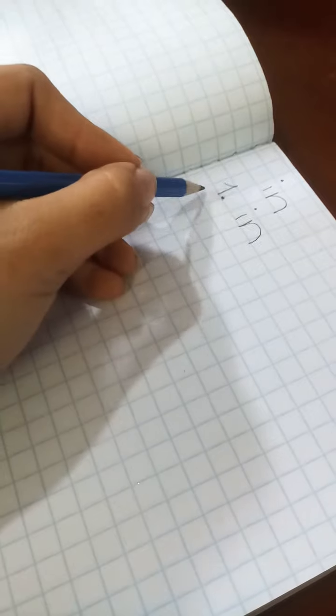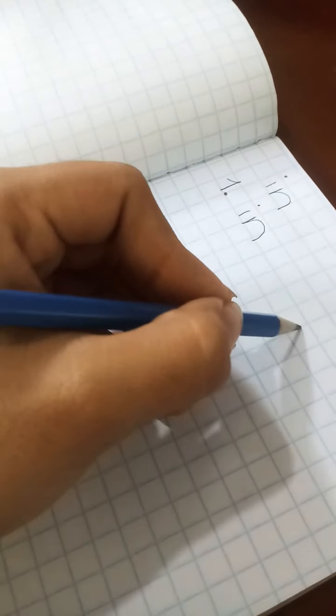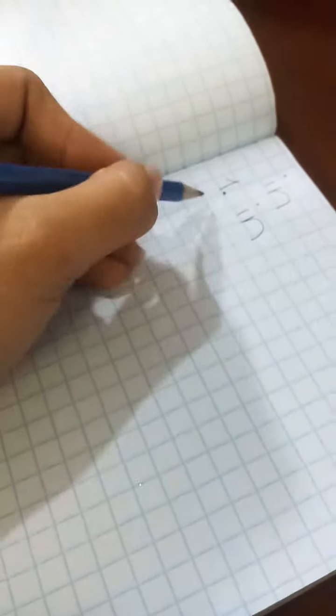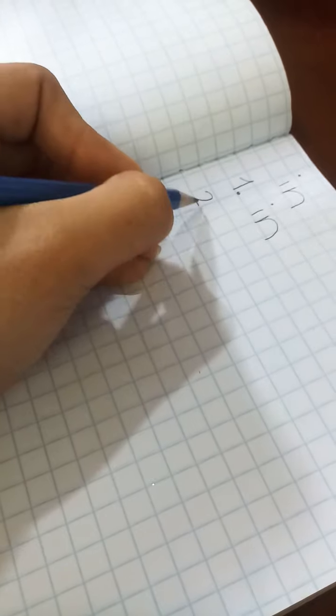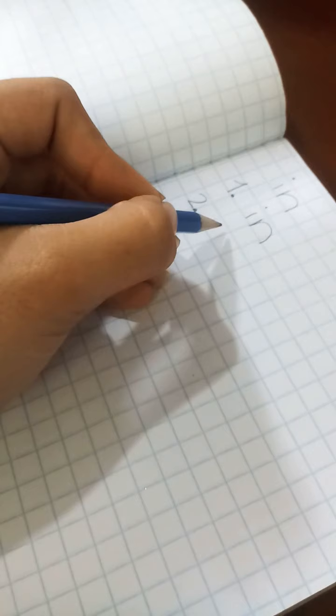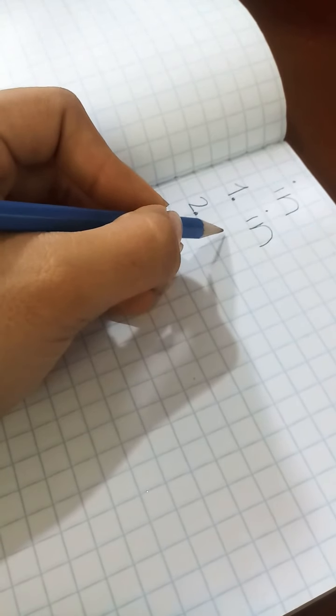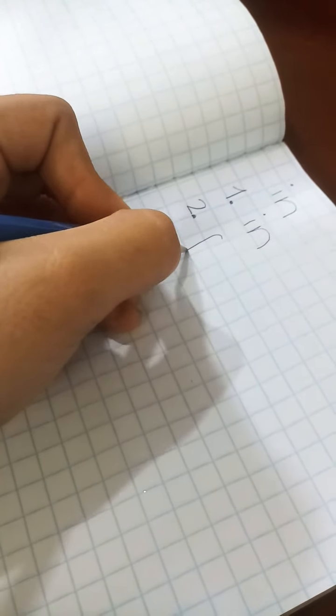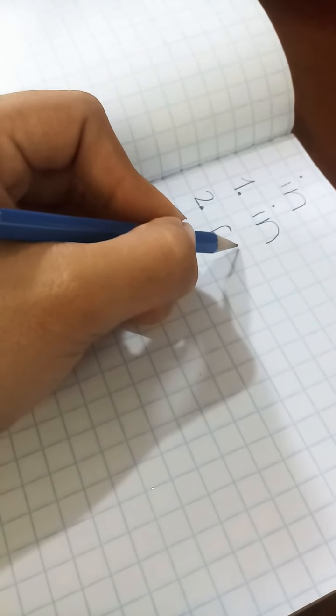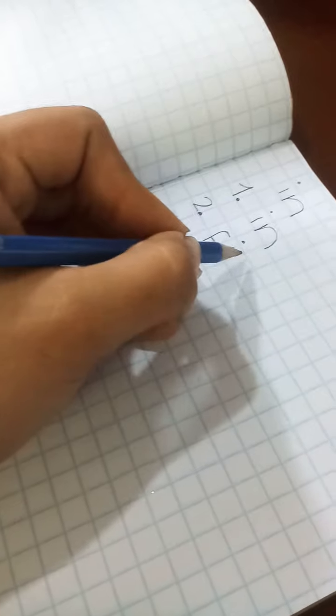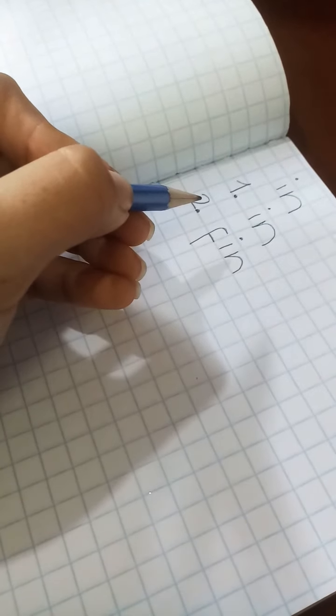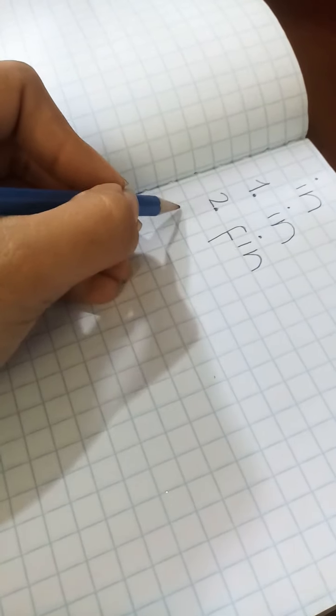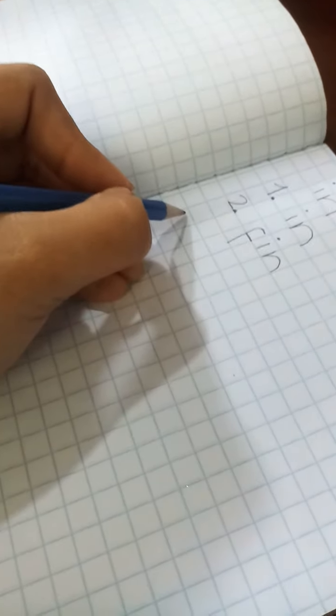Now we're going to leave one line and let's continue to the next one. We're going to write number two, period, and we're going to write 'thin'.